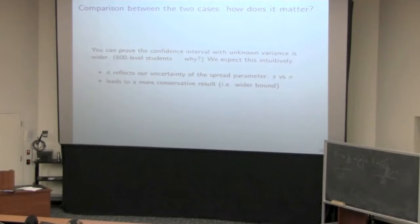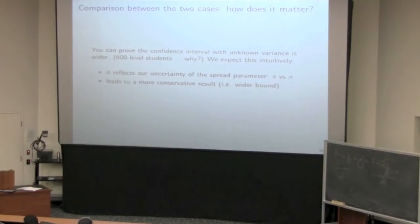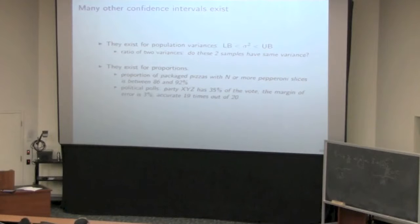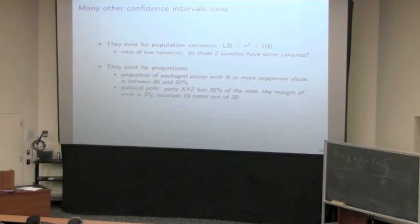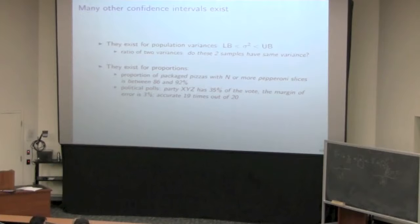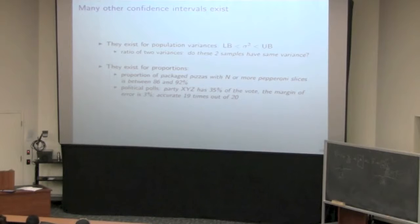There are many other types of confidence intervals you can deal with — for example, confidence intervals for variances and proportions. One you'll certainly encounter in the news all the time: a political party has an estimated 25% support with a margin of error of 3%, accurate 19 times out of 20. We've all seen this sort of statement if you follow politics.